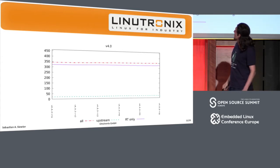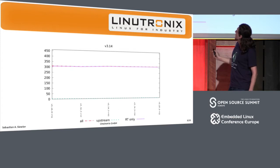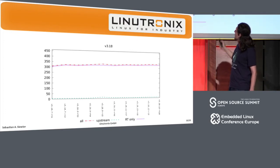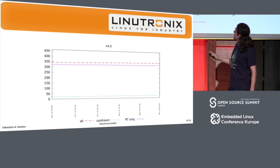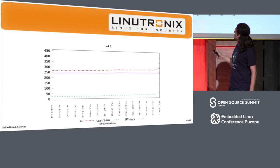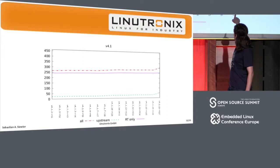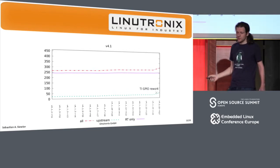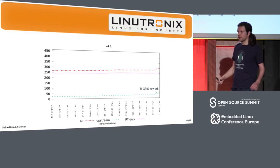After 3.18 — yes, exactly — we had 3.14 and I had no time for 3.16, so we went straight to 3.18. Then we had 4.1 and 4.11. There was a spike at the end of the 4.11 cycle, and this spike was due to the TI GPIO rework. The problem back then was that the GPIO driver didn't work perfectly and I had some duct tape to make it work.